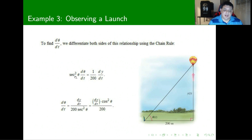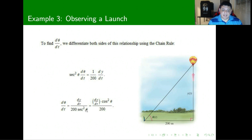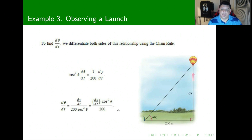We can simplify by writing this as dθ/dt equals (dy/dt) over (200 · sec²θ). Remembering that secant is 1 over cosine, we can flip this trigonometric identity and write: dθ/dt equals (dy/dt · cos²θ) over 200.